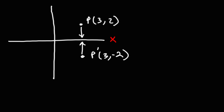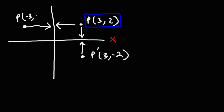Now what if we want to reflect the original point about the y-axis? Notice that we have to travel three units from that point to the y-axis, so the reflected point is also going to be three units from the y-axis. This time the y value stays the same but the x value changes from positive 3 to negative 3, giving us (negative 3, 2).